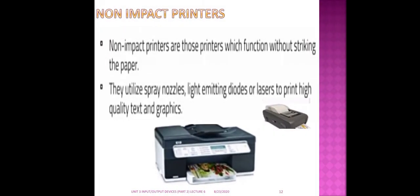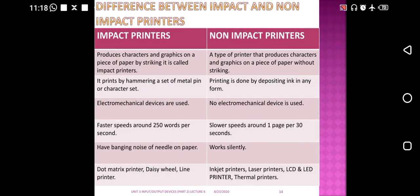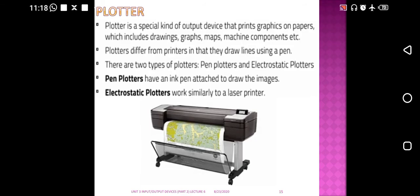Non-impact printers work without striking the paper; they use spray nozzles, light-emitting diodes, or laser beams for high-quality output. Types include: inkjet, which sprays ink; laser printer, which uses a laser beam; and LCD and LED printers, which use liquid crystal display or light-emitting diodes rather than laser. We also have thermal printers, which work by pushing heated pins against heat-sensitive paper — widely used in calculators and fax machines.